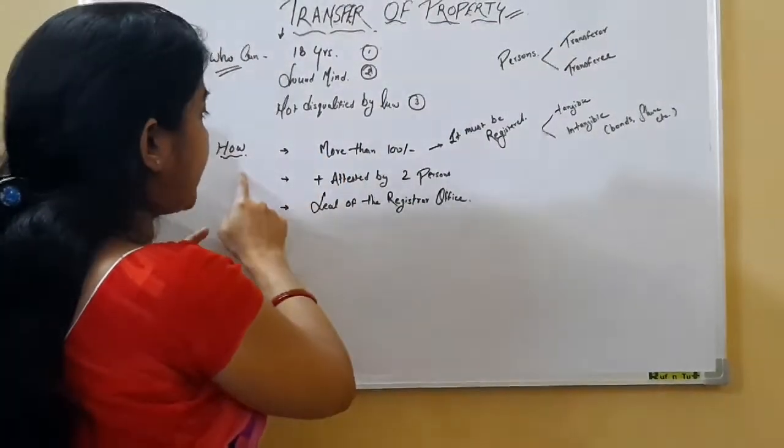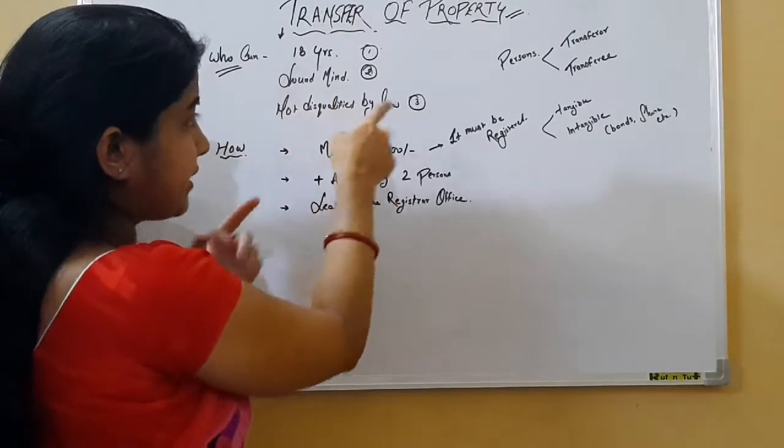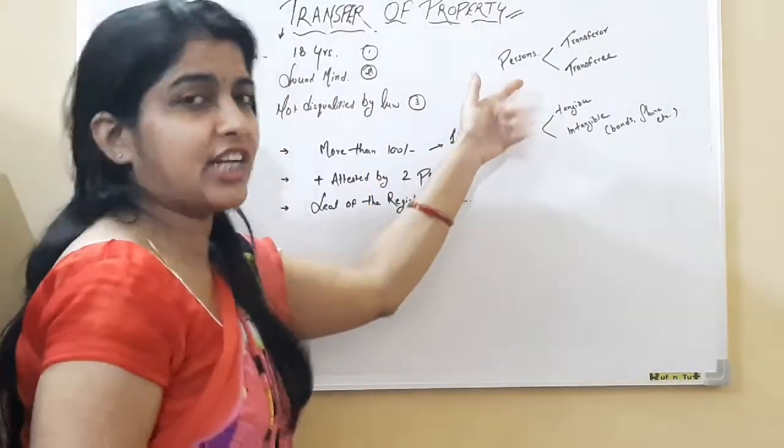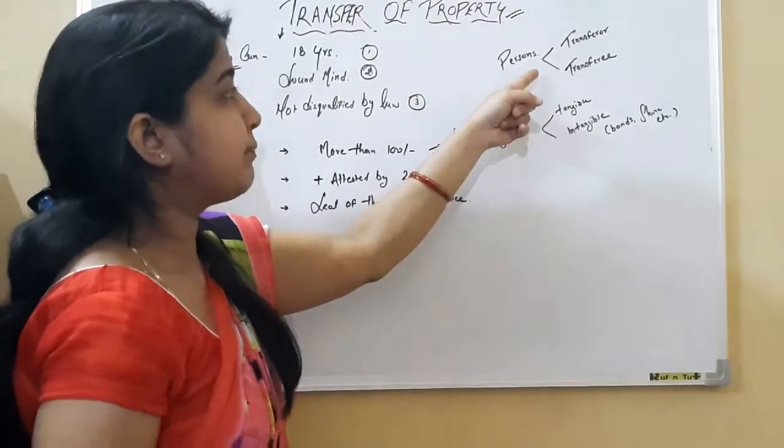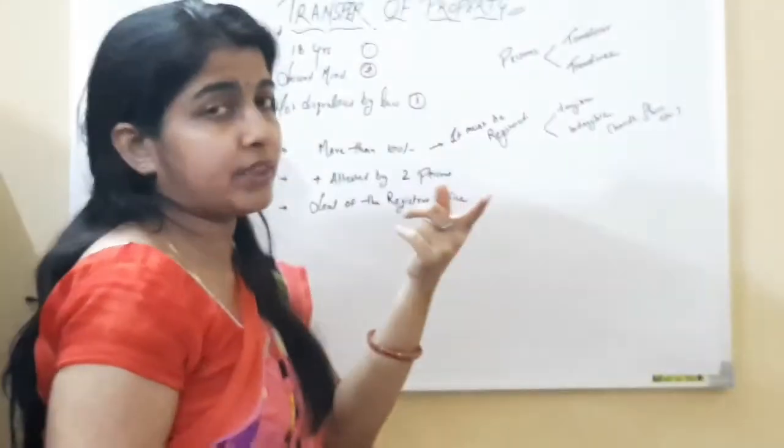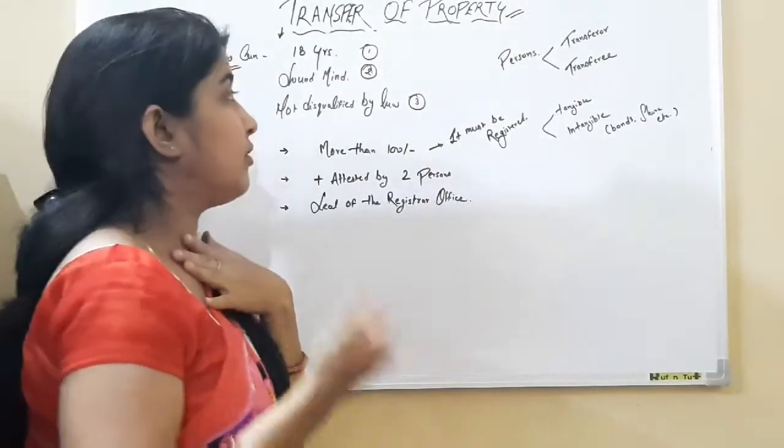Next, what property can be transferred. So these persons can be of two types. Transferrer or transferee.